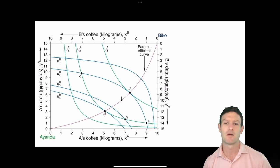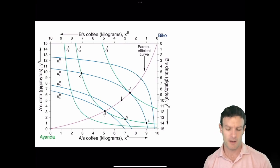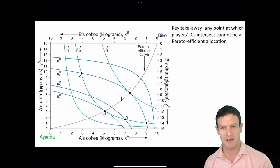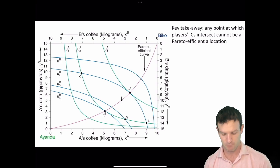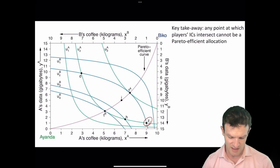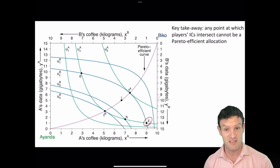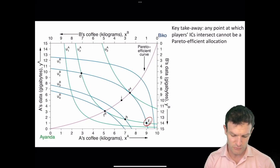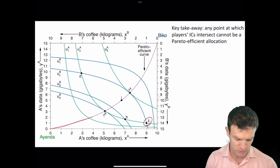Here we have an Edgeworth box between Ianda and Biko, and we're going to see that any point at which the players' indifference curves intersect cannot be a Pareto efficient allocation. We can see here that they're intersecting at point Z, the endowment point, and there is this alternative curve going from one corner of the box to the other.